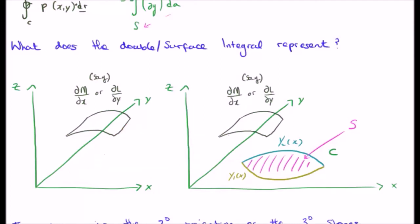So let's take each of our functions. Let's say we took either del m del x or del l del y. It doesn't really matter. Just pick one of them because both will do the same sort of thing, or the geometry will be the same.